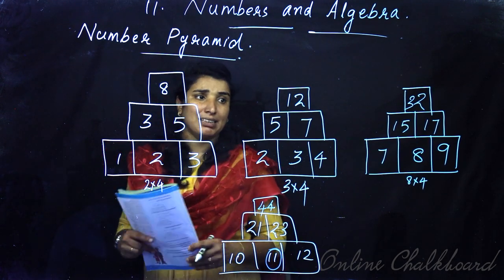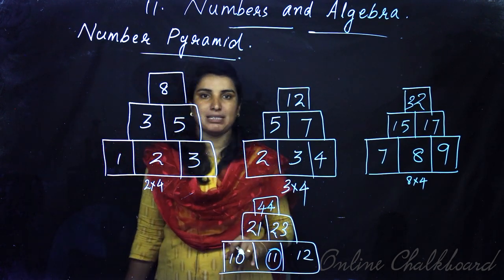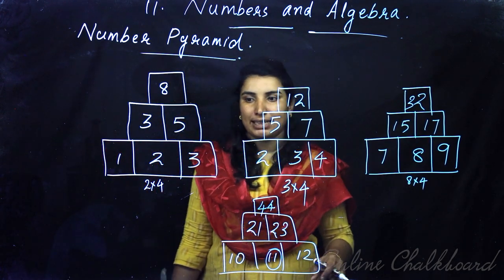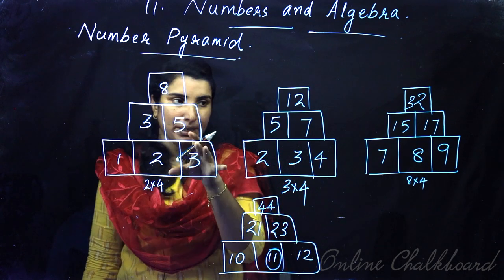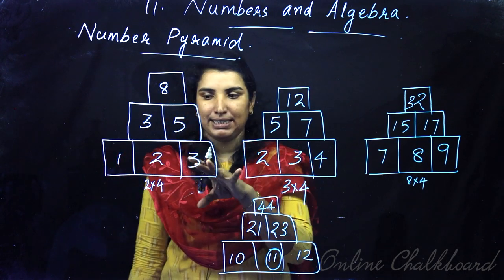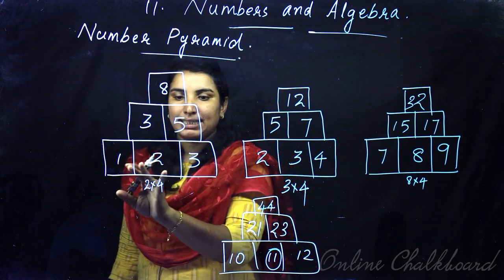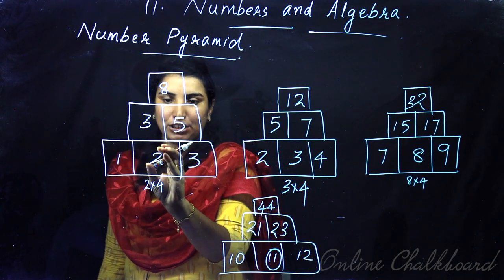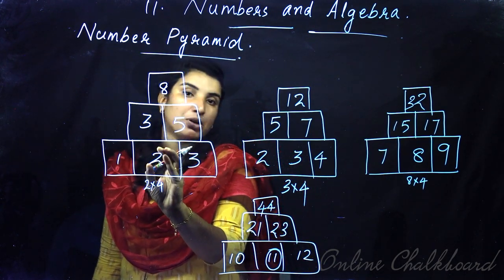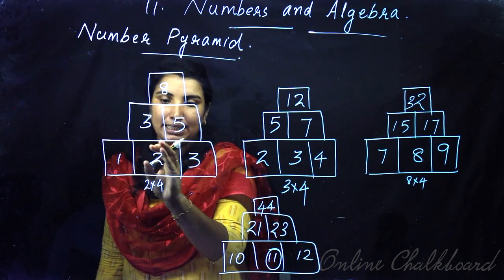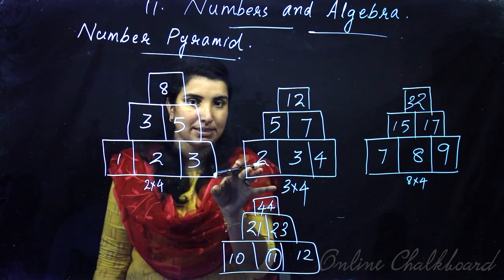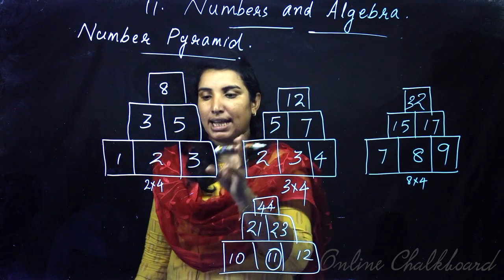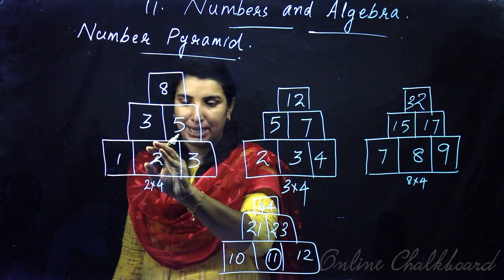That's how we call the general principle. We have constructed this all in the number pyramid. This is the bottom row. This is the middle row.